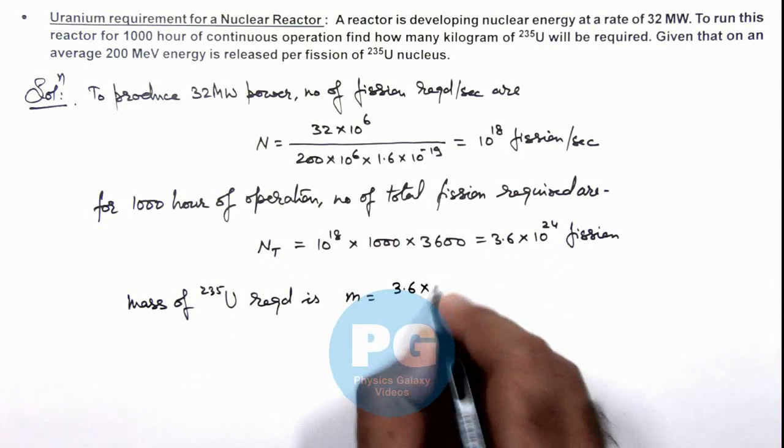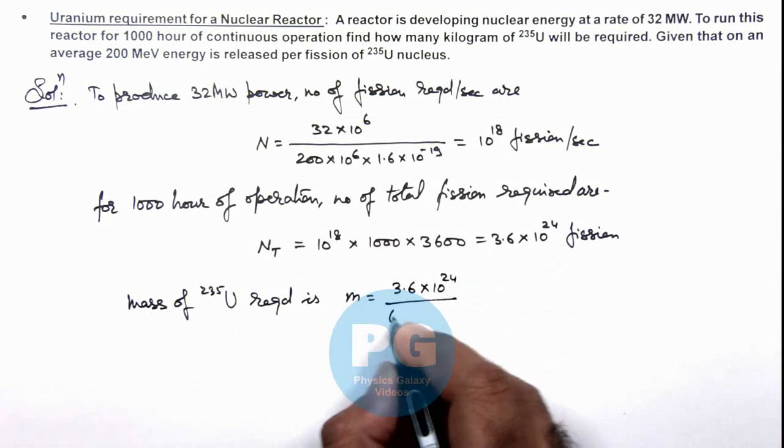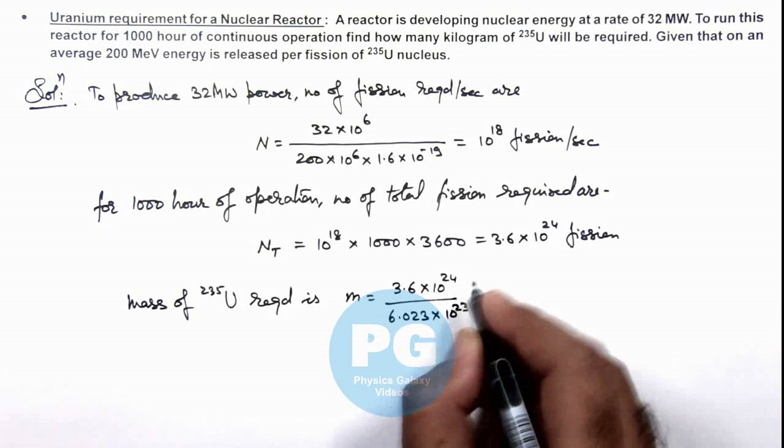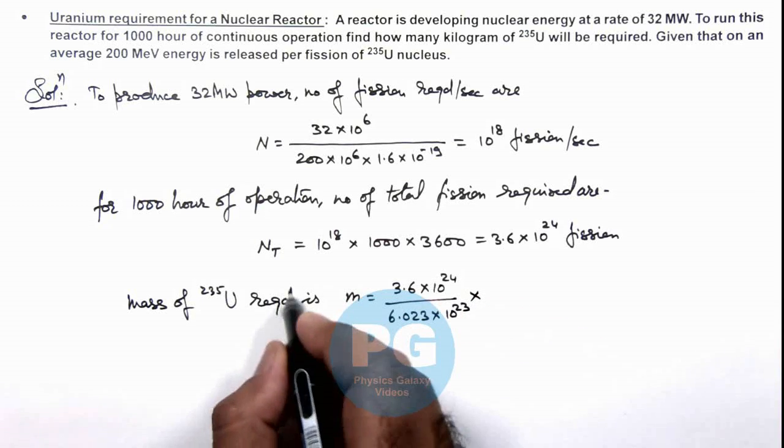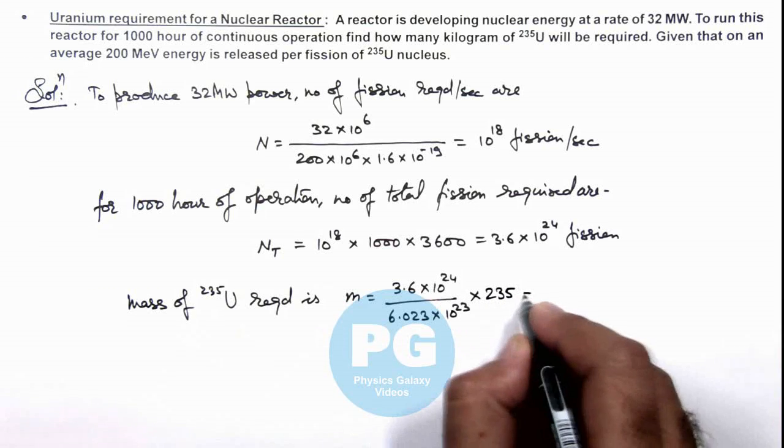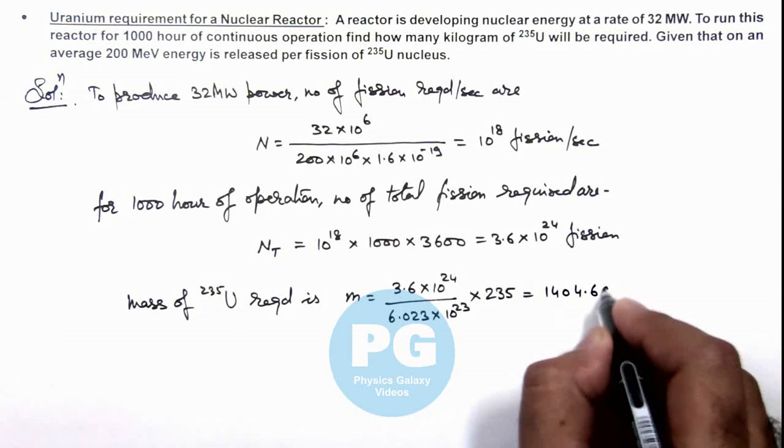3.6 × 10^24 divided by Avogadro's number, 6.023 × 10^23, multiplied by the atomic mass of uranium 235, which gives us 1404.6 grams.